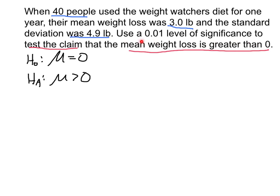We're focused on the alternative — the mean weight loss is greater than zero — but we can't put that in the null hypothesis. We have to write that in the alternative hypothesis. The null hypothesis is the place for equality; we're going to say the mean is equal to zero.